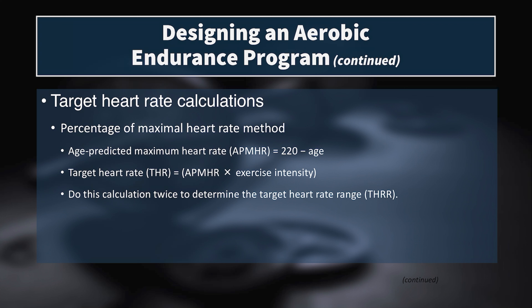The second method is the percent max heart rate method, which is simpler: take your age-predicted max heart rate—187 for me—and multiply directly by the exercise intensity. At 75%, that's 187 × 0.75 = 140 beats per minute. Perform the calculation twice to determine the zone range. This comes out slightly lower than the Karvonen method.